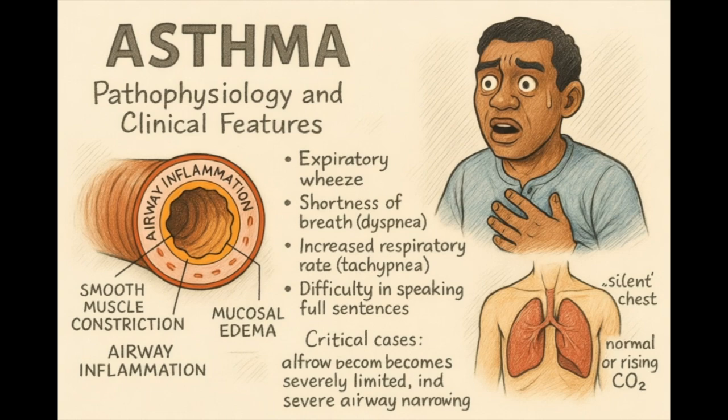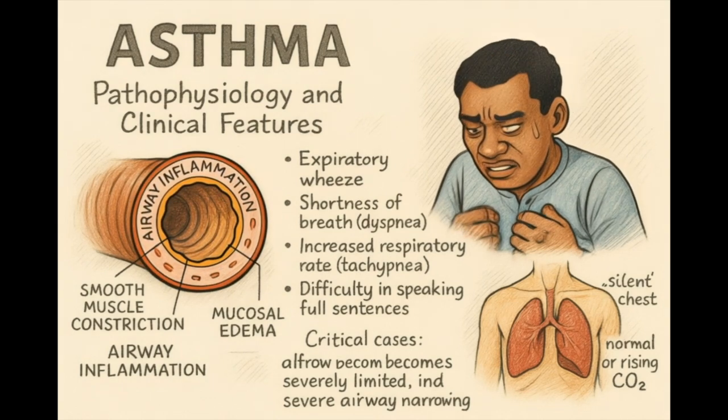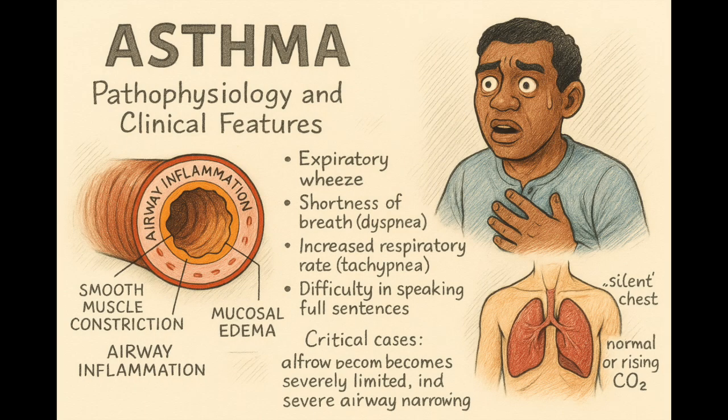Patients with asthma typically present with dyspnea, wheezing, and prolonged expiration. Initially, they exhibit tachypnea and tachycardia, often relying on accessory muscles for breathing. As the condition worsens, the patient may become hypoxemic, displaying confusion or agitation.